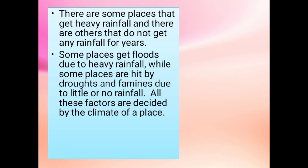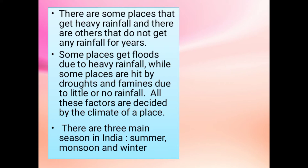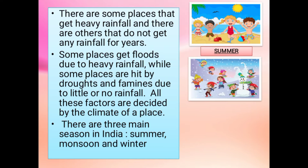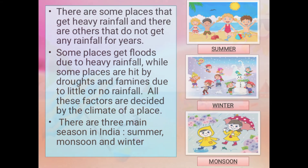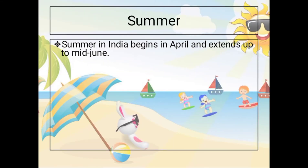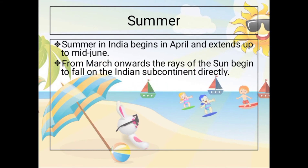Some places are hit by droughts and famines due to little or no rainfall. All these factors are decided by the climate of a place. There are three main seasons in India: summer season, winter season, and monsoon. Let's talk about summer season. Summer in India begins in April and extends up to the middle of June. From March onwards, the rays of the sun begin to fall on the Indian subcontinent directly.